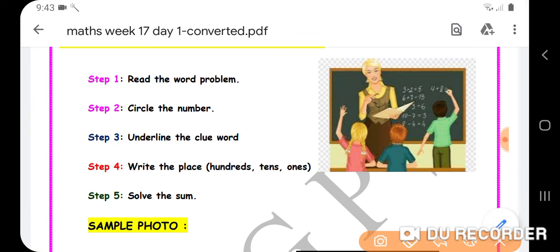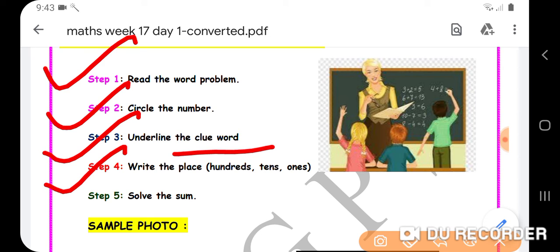Before doing your statement sums, there are some steps to remember. Step 1: Read the problem. Step 2: Circle the number. Step 3: Underline the clue word. Step 4: Write the place—hundreds, tens, ones.